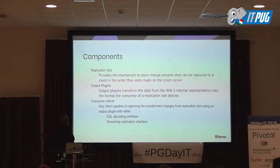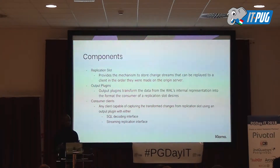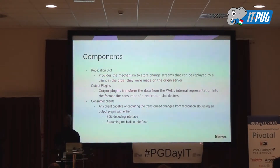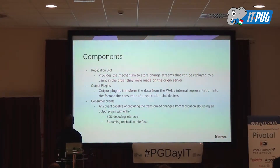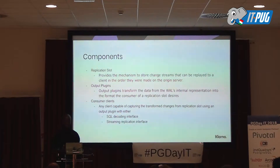Let's look at the components of logical decoding. They are basically replication slots — you need to create a replication slot in your database. This gives you the mechanism to store the changes in the tables so they can be replayed in commit order back to a client. You need an output plugin, which goes to your WAL files, extracts those changes, and plays them back to a consumer. You also need a consumer client, which can use either the SQL interface or the streaming replication interface.